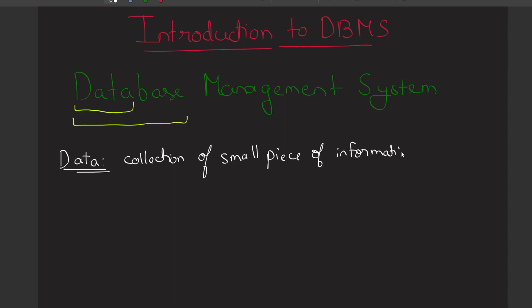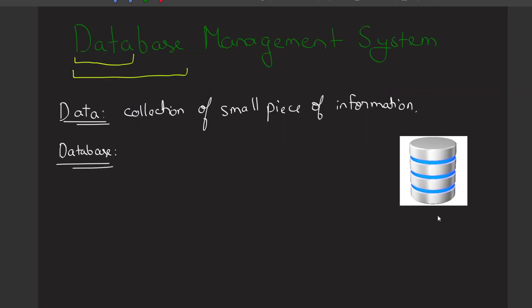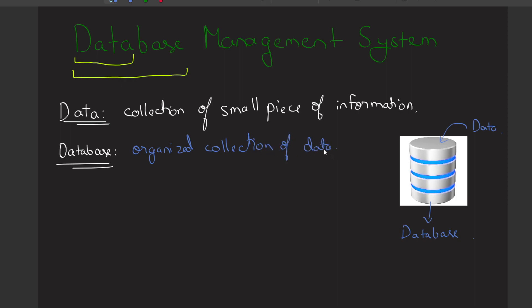Data is a collection of small pieces of information. Now let's discuss what is a database. Have you ever seen this kind of cylindrical figure? That is nothing but the database. A database will store data - it's a container of data. You can say it's an organized collection of data.